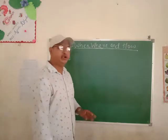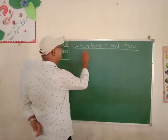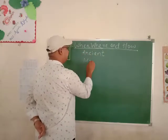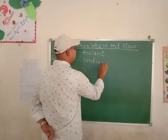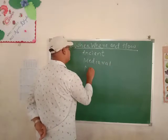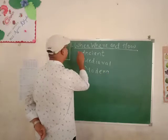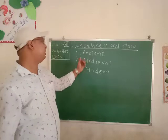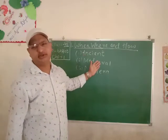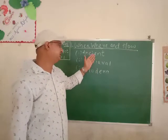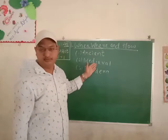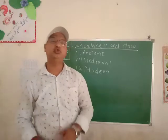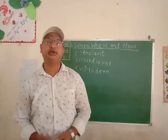History is divided into three parts. The first one is ancient, the second one is medieval, and the third one is modern era, which consists of the British rule and the modern era which we are studying now.